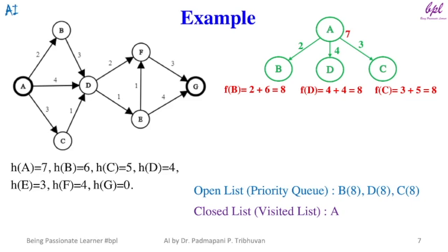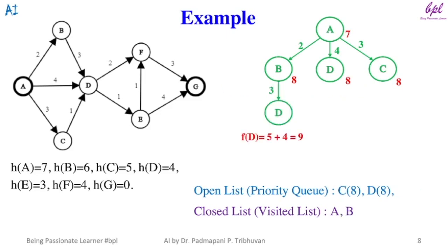Out of these three nodes, the one with the lowest evaluated value will be selected and explored if it is not a goal node. Here all three nodes have the same evaluated value, so alphabetical order will be followed and node B will be selected. Node B is not a goal node, so it will be explored and then added to the closed list.